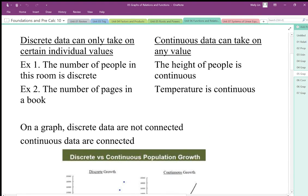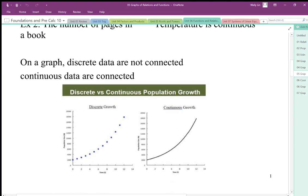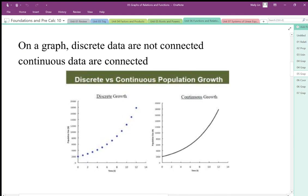On a graph, the way we differentiate discrete data versus continuous data is discrete data we keep as separate dots. When we graph things, we often get points along this graph, and if it's continuous, we'll connect those dots.